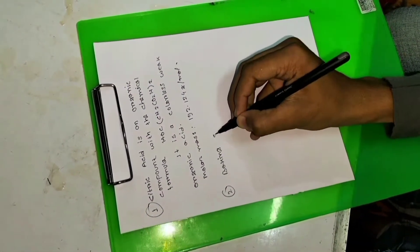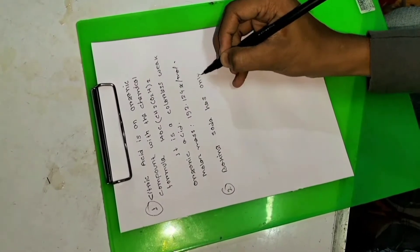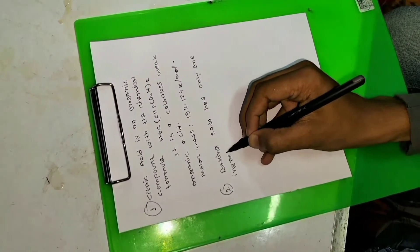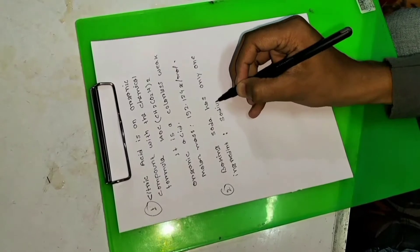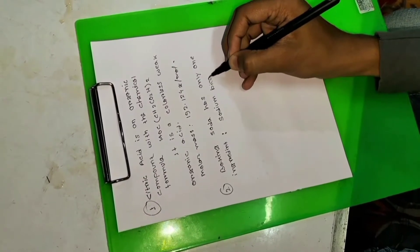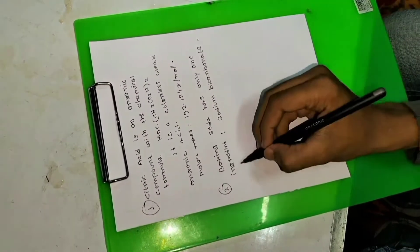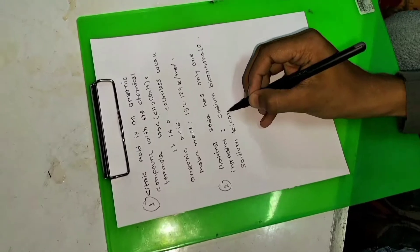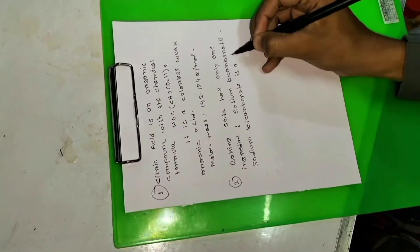Baking soda has only one ingredient: sodium bicarbonate. Sodium bicarbonate is a base that reacts when it comes into contact with acid.